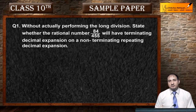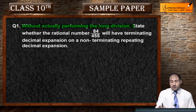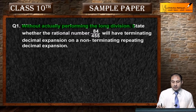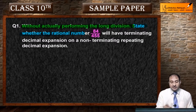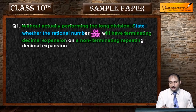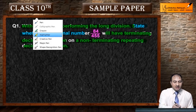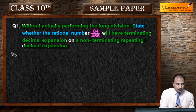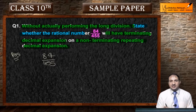Now, see the first question of the paper. The question is: without actually performing the long division, state whether the rational number 84 upon 455 will have terminating decimal expansion or non-terminating repeating decimal expansion. Aapko batana hai ke jo fraction 84 by 455 diya hua hai, yeh kis tarah ka decimal expansion rakhega?